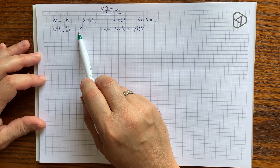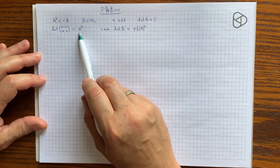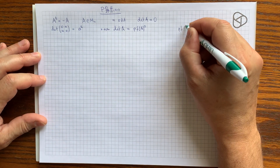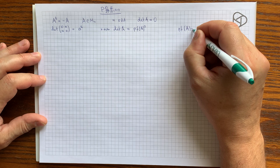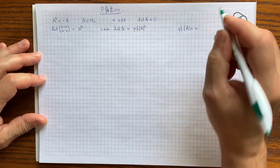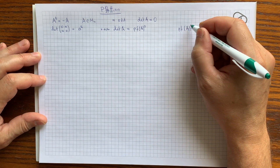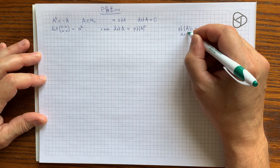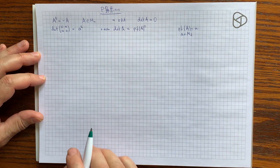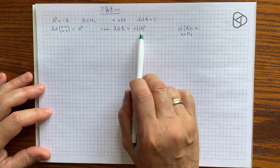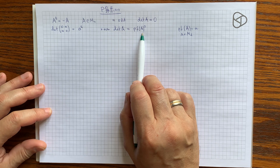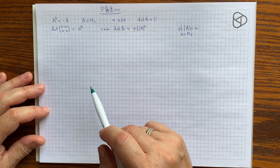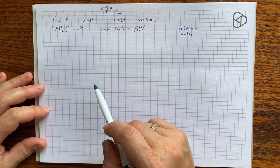This happens for all even sizes. If the size is odd the answer is zero, but if even, the determinant of the matrix will always be a square of some polynomial expression of matrix entries. This polynomial expression is called the Pfaffian. Here I will not be proving this property or defining the Pfaffian — I will just be computing the answer for size four.